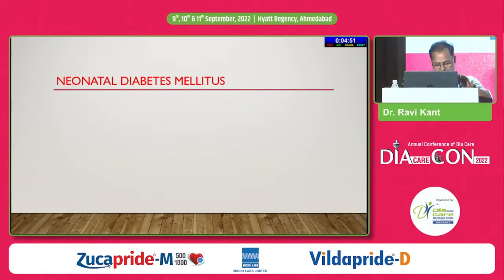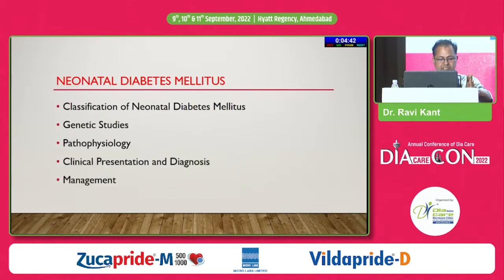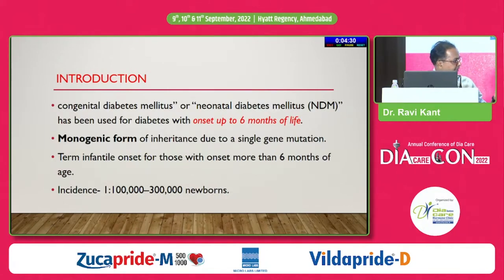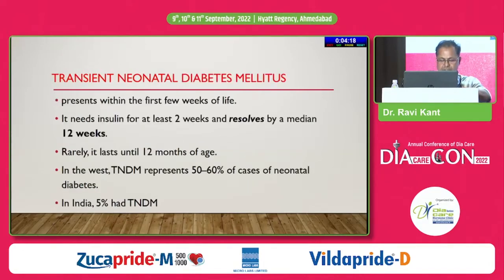Now I am coming to neonatal diabetes mellitus. We are going to discuss classification — permanent or transient — what genetic studies are required, pathophysiology, clinical presentation, diagnosis, and management. Up to six months of life after birth, if diabetes is present, this is known as neonatal diabetes mellitus. After six months to one year, this is considered infantile diabetes. The types of classification: transient — persists for about 12 weeks after which it is no longer present; or permanent — persisting throughout early childhood and maybe into late adulthood.